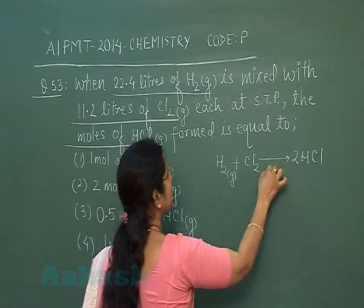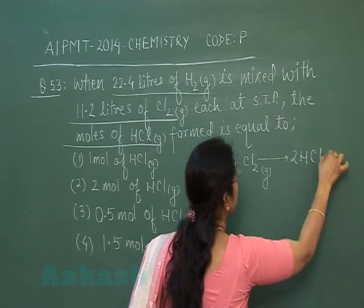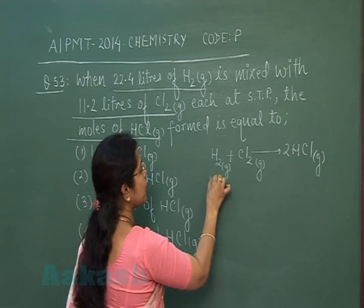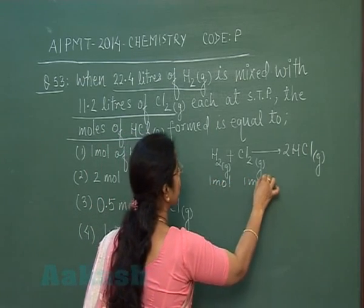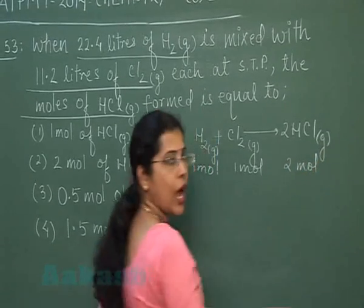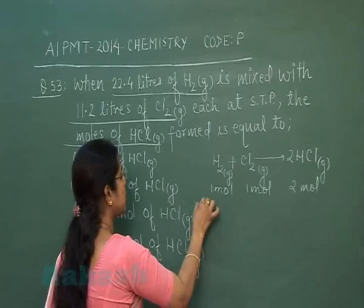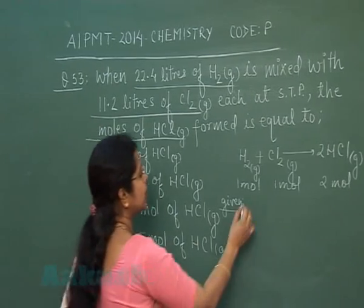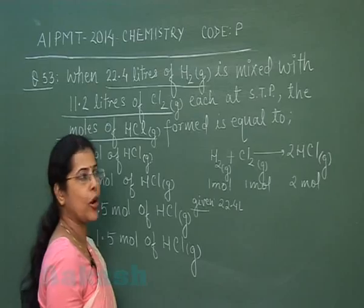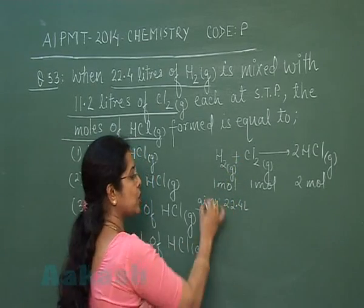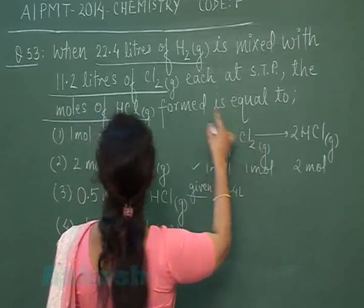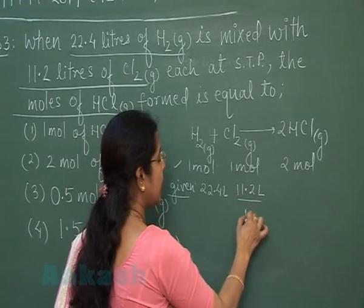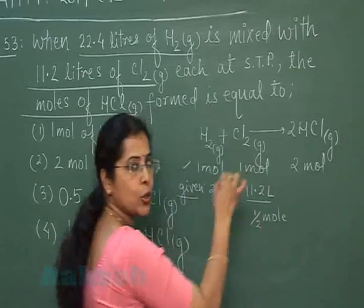Hydrogen, chlorine, and hydrogen chloride are all gases. According to the balanced chemical equation, 1 mole of H₂ reacts with 1 mole of Cl₂ to produce 2 moles of HCl. In this question, 22.4 litres of hydrogen at STP equals 1 mole of hydrogen, while 11.2 litres of chlorine at STP equals only half a mole of chlorine.